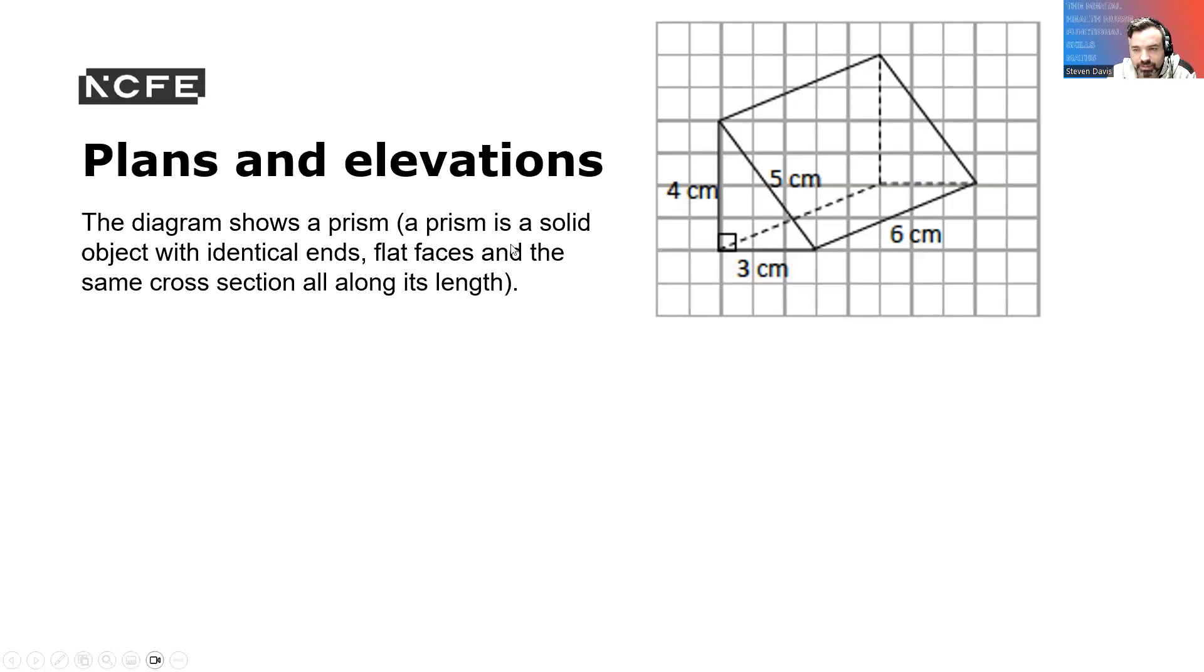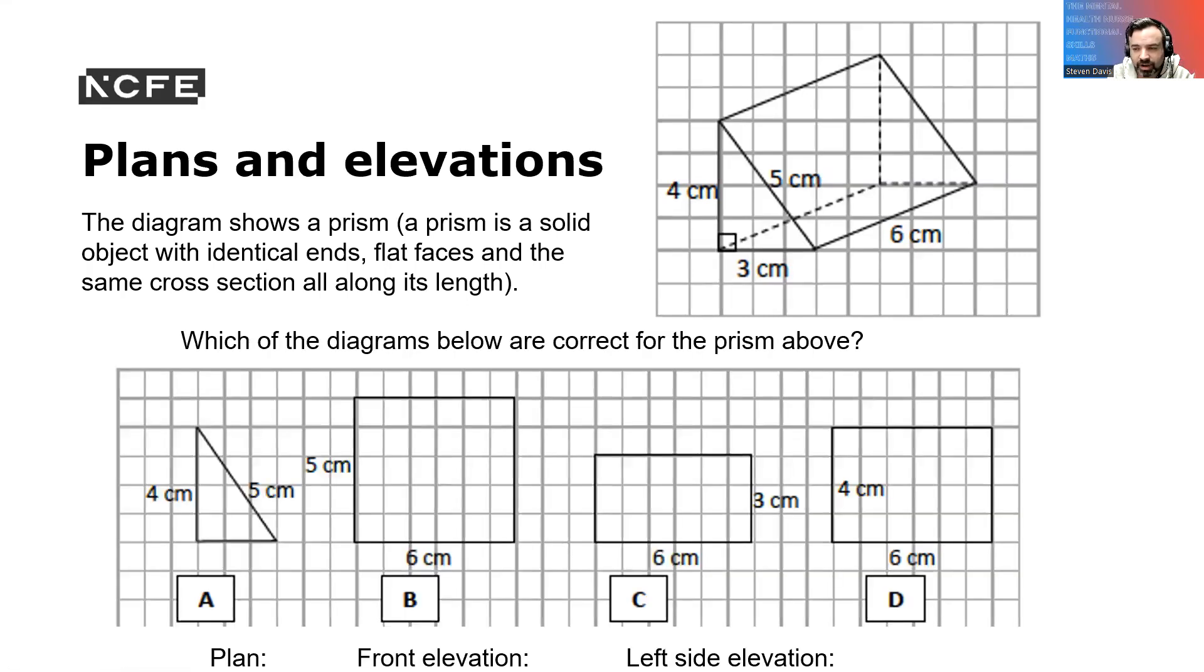Plans and elevations. The diagram shows the prism. The prism is the solid object there. You've got the identical ends, so here and there. The flat face is the same across the section along the length. Which of these diagrams below are the correct views for the above? You would see that the plan is C. For the front elevation, you've got A. And the left side elevation would be D, the bigger one.